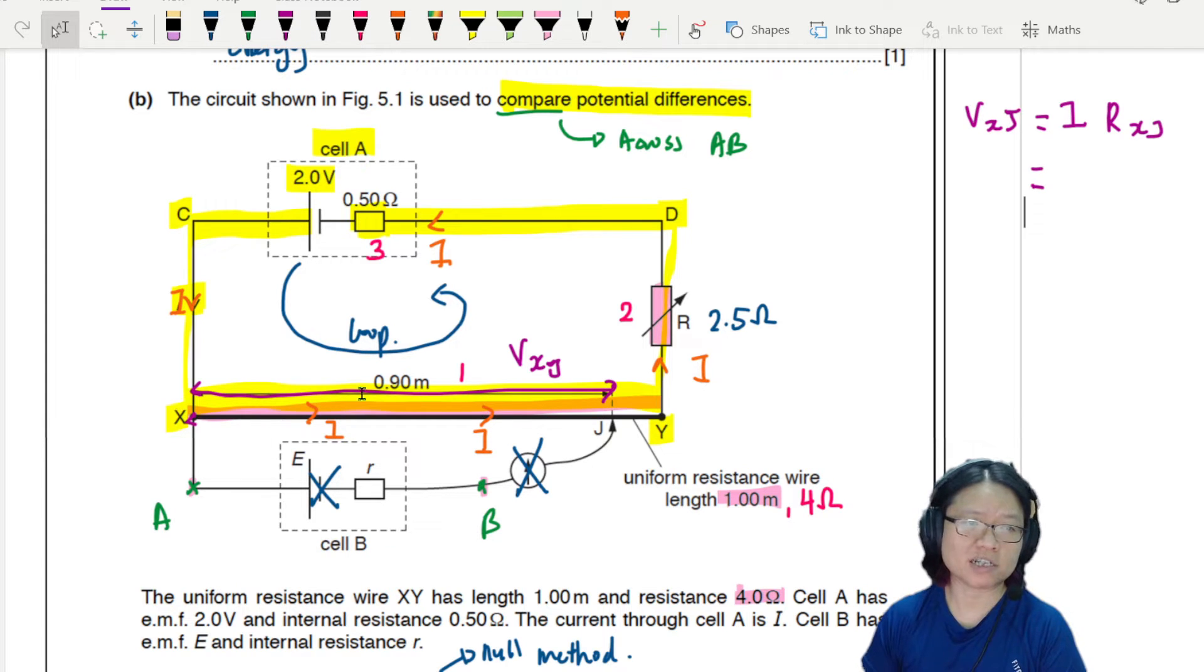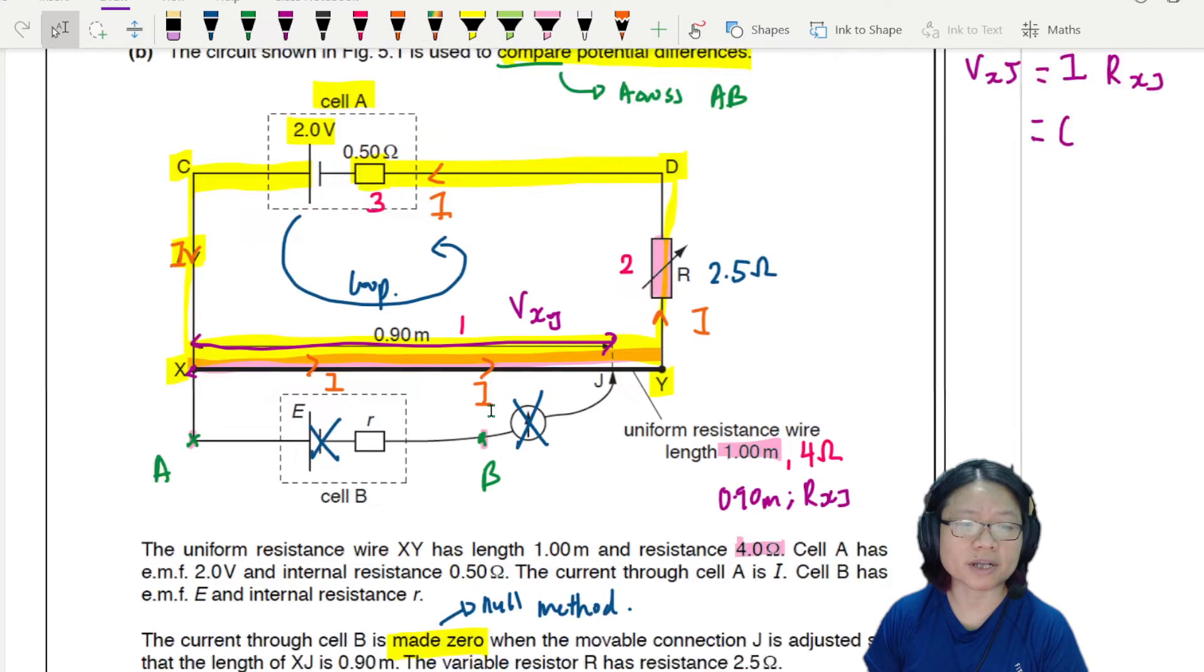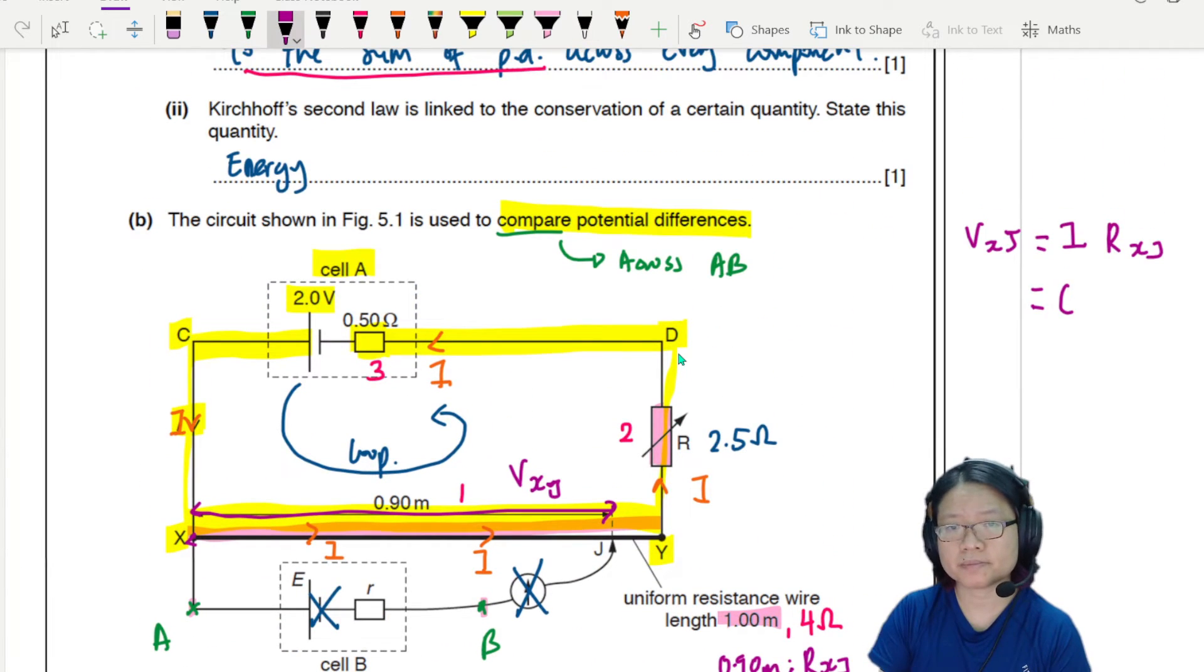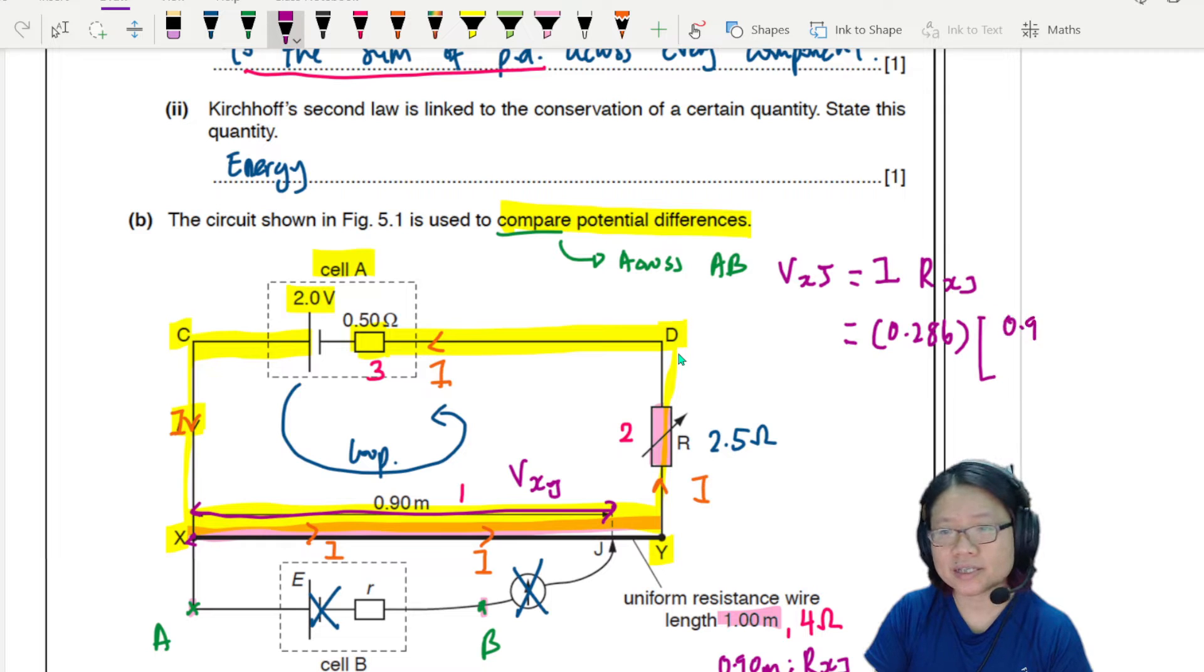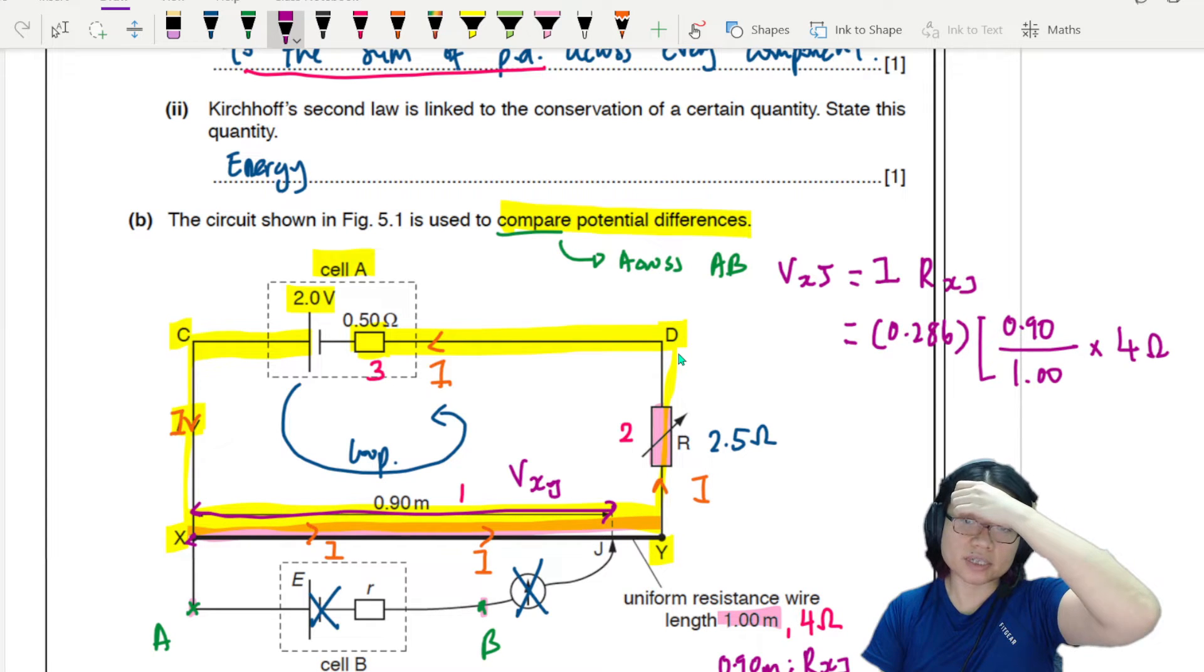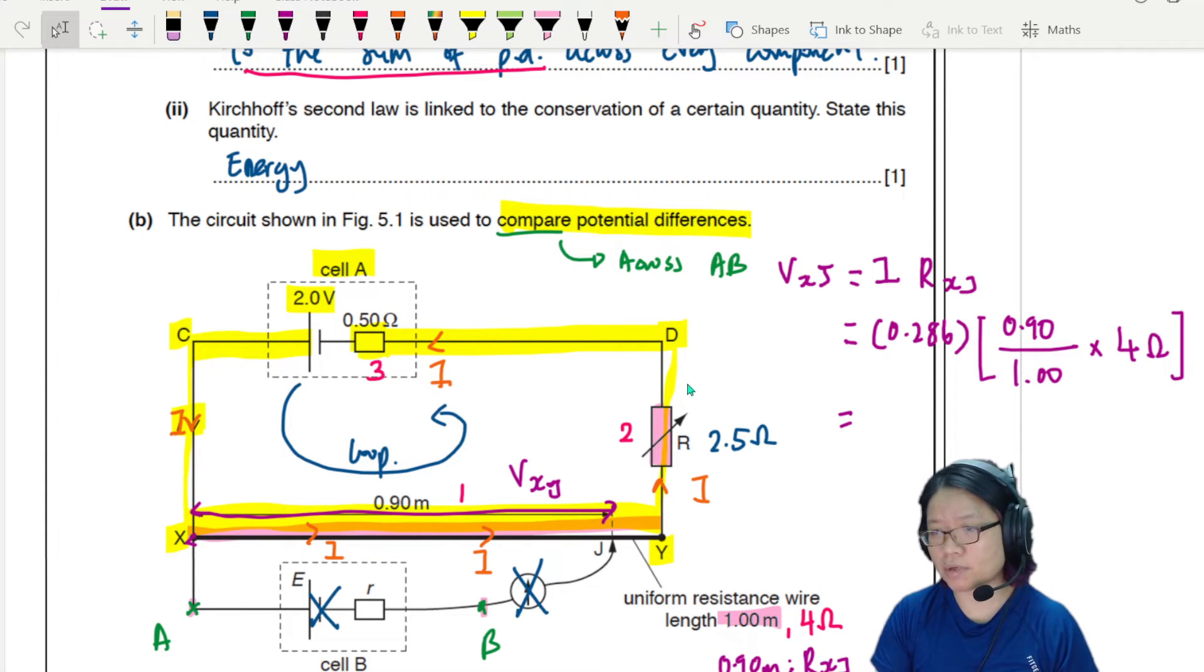So from X to J, the distance is 0.9 meter. So if 1 meter is 4 ohm, 0.90 meter, we are talking about the resistance XJ. So we can use ratio again. We have the current already. We're going to copy that value of I, 0.286 here. And to find the resistance of XJ, what we can do is we can use ratio. It is 90 cm or 0.9 meter out of 1.00 meter. And then the total resistance is 4 ohm. So I'll just multiply by 4. So this is 3.6. So if I press my calculator, the value that I get here is 1.03 volt.